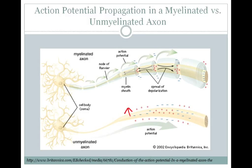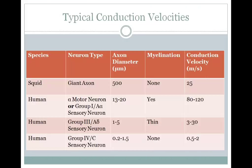In a myelinated axon, action potentials only occur at the nodes of Ranvier, where there are voltage-gated sodium channels, and current is spread passively underneath the myelin sheath. The reason it's called saltatory conduction is because it looks like the action potential is jumping from node to node.